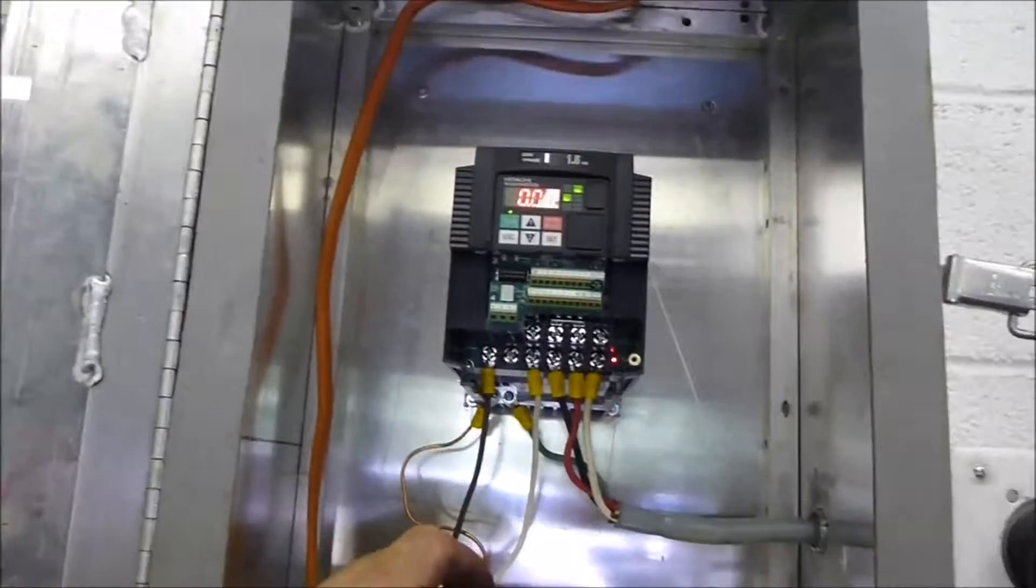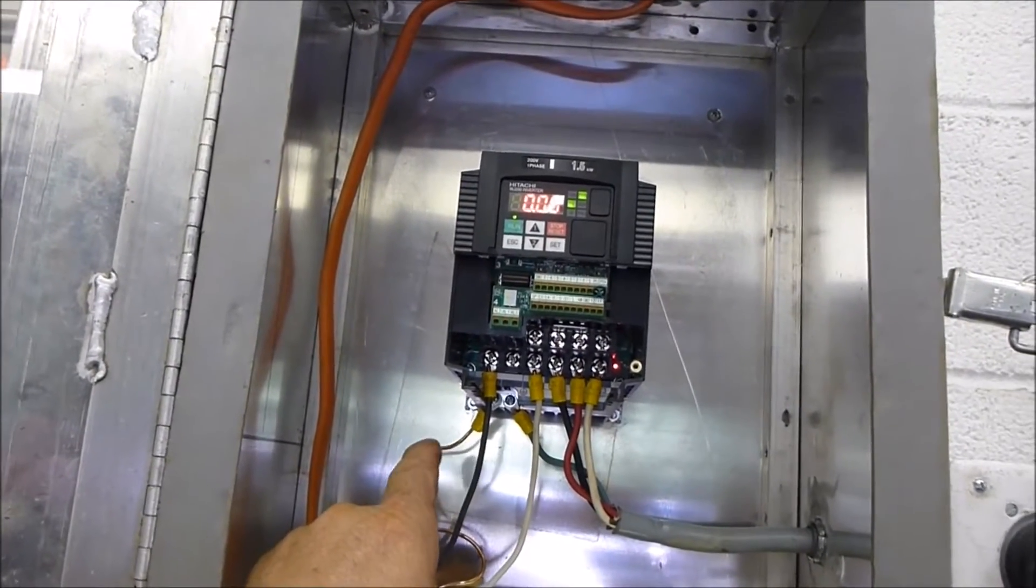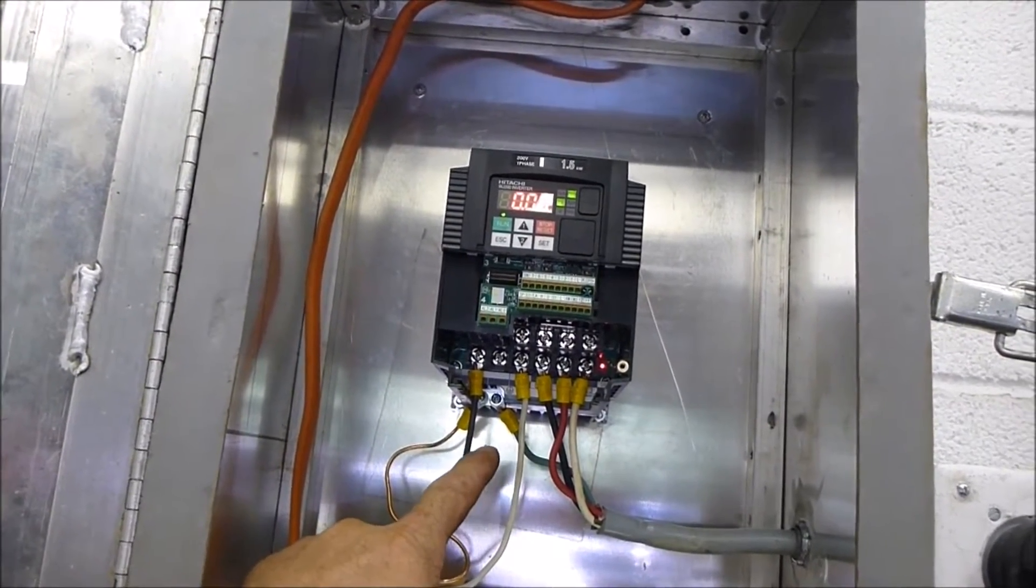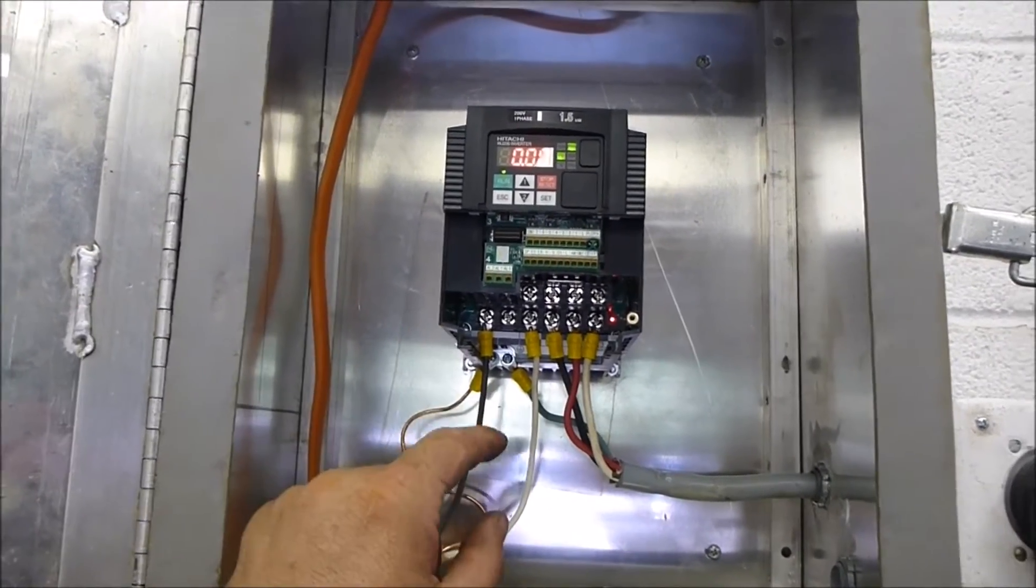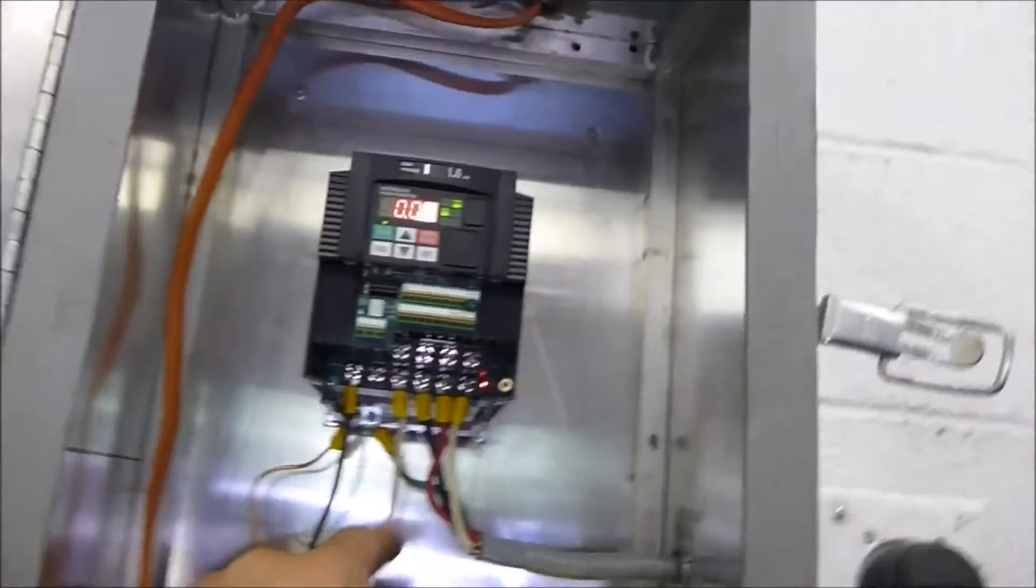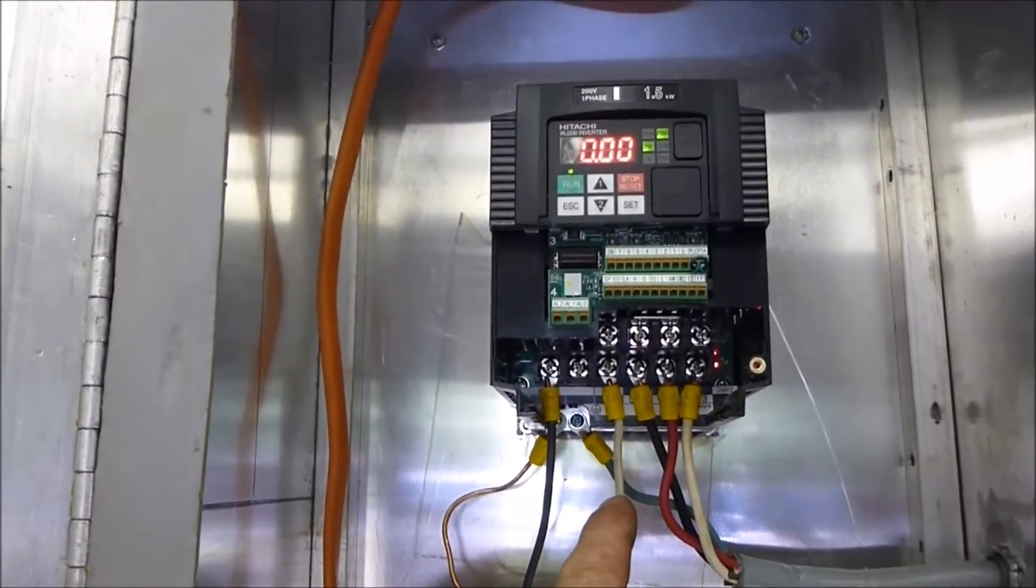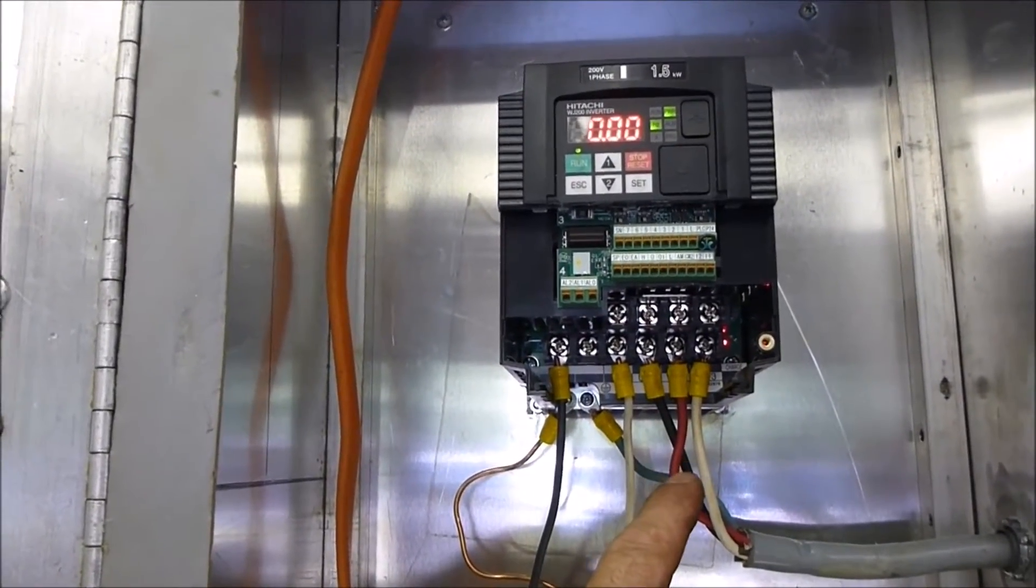The way I've connected my VFD is I've got my black going to the left, white going to the third lug, and of course the ground going to it. On the outbound side of the VFD, of course I've got the ground, then I've got my black wire, red wire, and white wire.